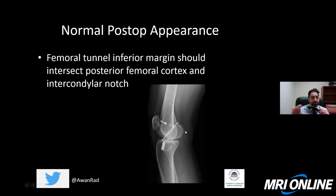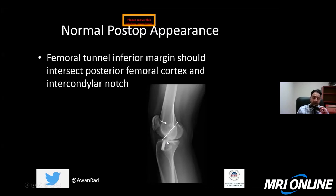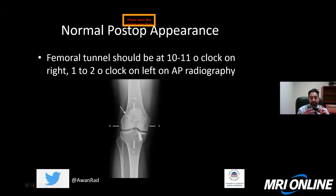On an x-ray or coronal and sagittal MRI, you can assess positioning. Drawing a vertical line along the posterior aspect of the femoral cortex and an oblique line along the roof of the intercondylar notch — where these two lines intersect is where the inferior aspect of the femoral tunnel should be. The tibial tunnel should lie just posterior to the intercondylar notch. On a frontal AP view, the femoral tunnel should be at the 11 o'clock position for the right knee and 1 o'clock for the left knee.